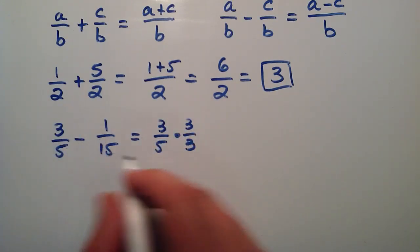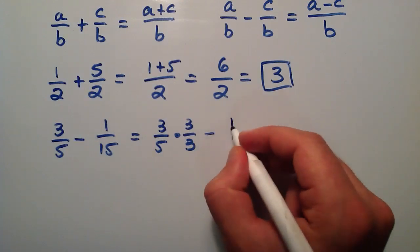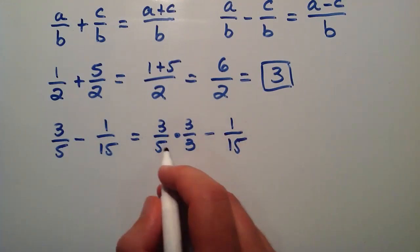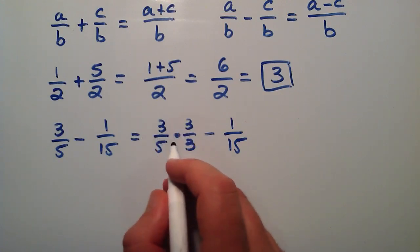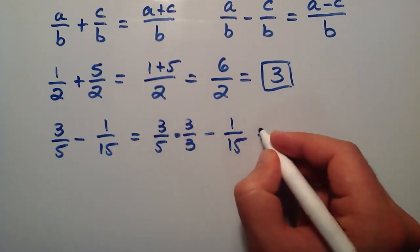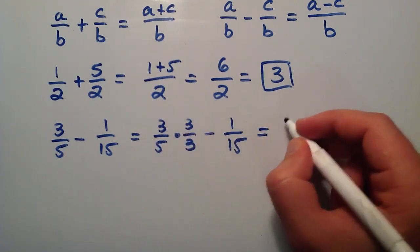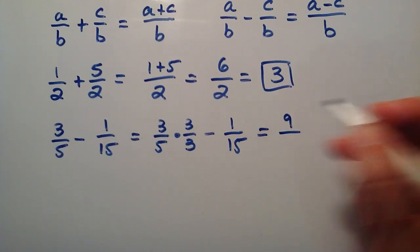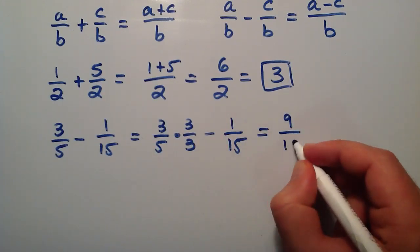And then we're going to subtract the second term, one divided by fifteen. Now this expression, the way we handle this here, when you have one fraction multiplied by another, you simply multiply the numerators together. So this becomes three times three, which is nine. And this is five times three, which is fifteen.